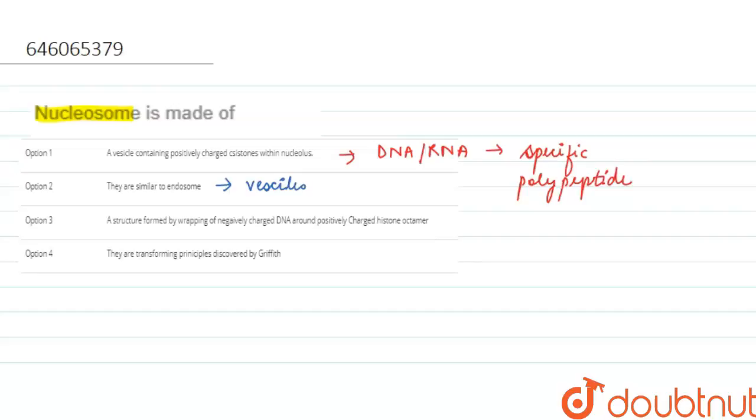There are histone proteins. When we are talking about a nucleosome, it is a structure in which the histone proteins are present and these histone proteins are made up of amino acids and they are positively charged. So around these histones, eight histones form an octamer.